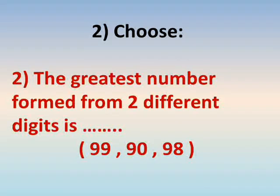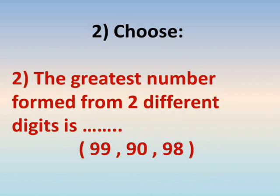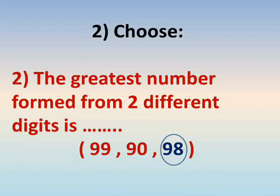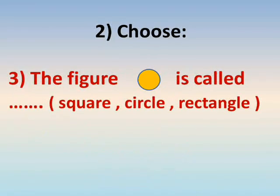Number two: the greatest number formed from two different digits. The best digit is nine — but the two digits must be different, so ninety-eight. Which is greater: ninety or ninety-eight? Ninety-eight is the greatest number from two different digits.